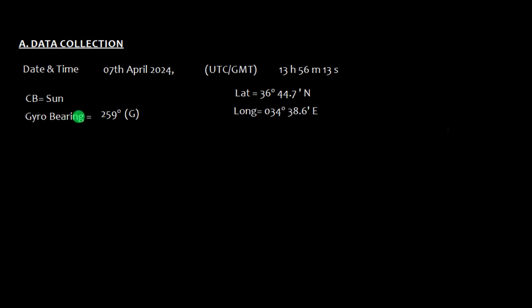You need to go to the gyro repeater and observe the bearing of sun, which is 259 degree gyro. Please note down how it is represented. Then we need to take down the position from GPS, that is latitude 36 degree 44.7 minute north and longitude 034 degree 38.6 minute east.